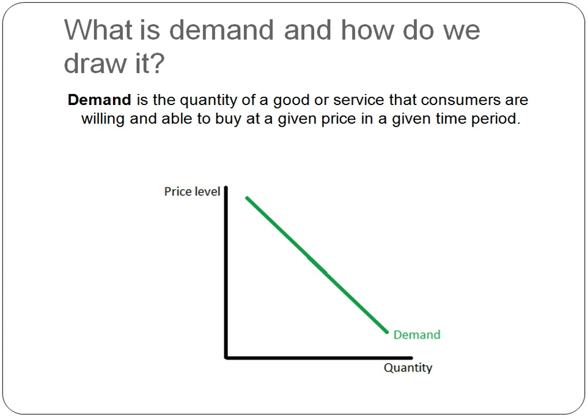What is demand and how do we draw it? Demand is the quantity of a good or service that consumers are willing and able to buy at a given price in a given time period. When you're drawing your demand curves, make sure demand is going downwards. Price level is always up on the vertical axis and quantity is always along the bottom.